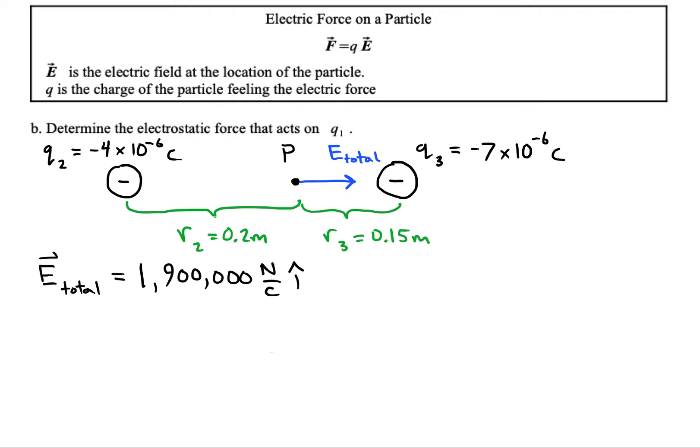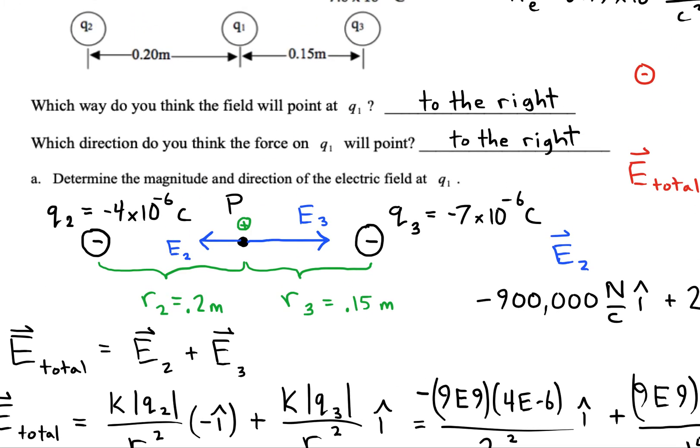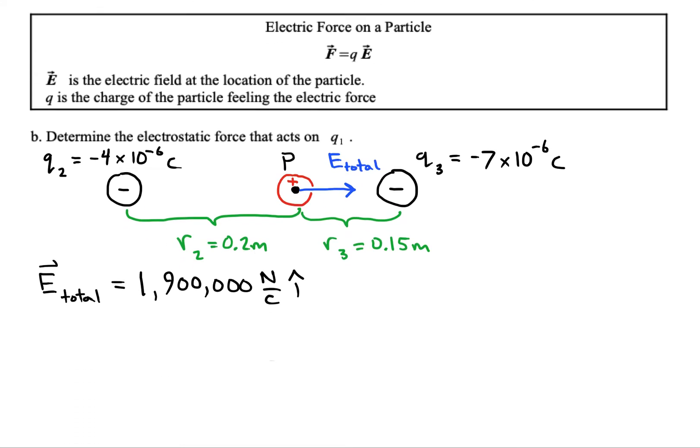The next question is going to ask us to find the force that acts on a particle located at point P. Now the particle that's there is a positive charge and it has a magnitude of six microcoulombs.